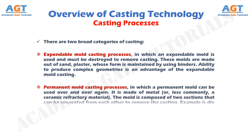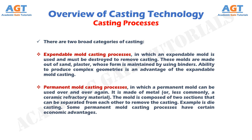The second category is permanent mold casting processes, in which a permanent mold can be used over and over again. It is made of metal, or less commonly, a ceramic refractory material. The mold is composed of two sections that can be separated from each other to remove the casting. An example is die casting. Some permanent mold casting processes have certain economic advantages.